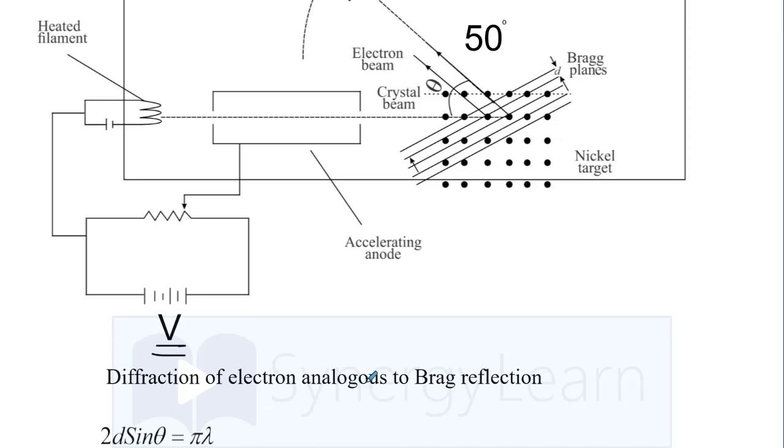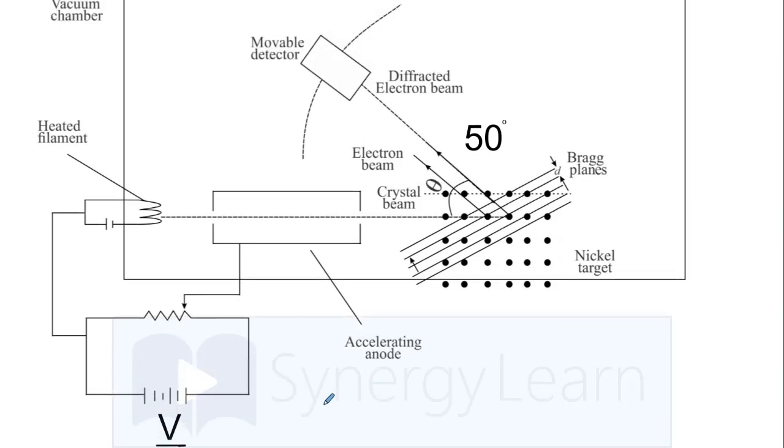Davison-Germer is an attempt to establish this using experiment. The electrons which were accelerated at 54 volt are allowed to hit nickel target. These electron beams after diffraction—we are using term diffraction because we are assuming that electrons at nickel target will undergo diffraction.